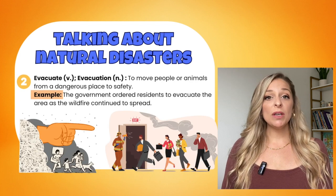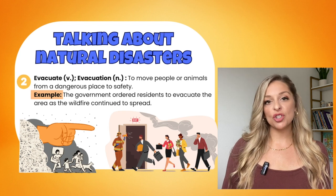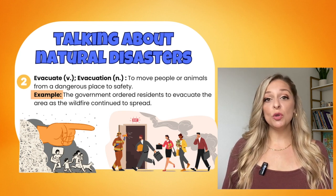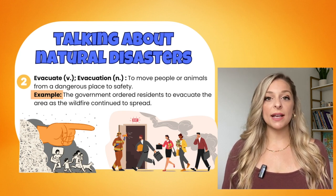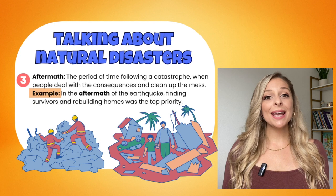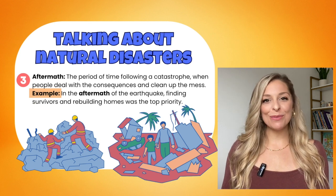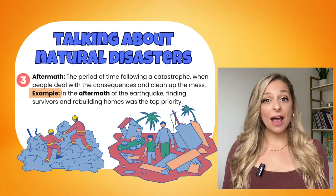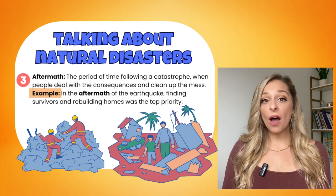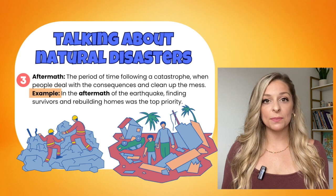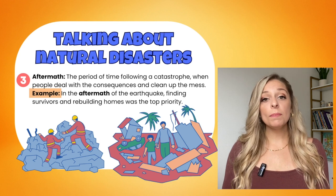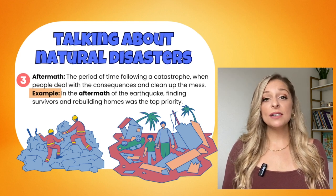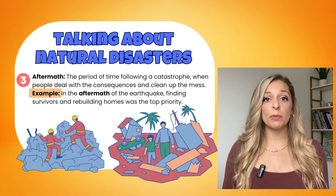Word number two is to evacuate as a verb, or evacuation in the noun form. This means to move people or animals from a dangerous place to safety. For example: the government ordered residents to evacuate the area as the wildfire continued to spread. Word number three is aftermath. The word aftermath refers to the period of time following or after a catastrophe — this is when people deal with the consequences and clean the mess up. For example: in the aftermath of the earthquake, finding survivors and rebuilding homes was the top priority.